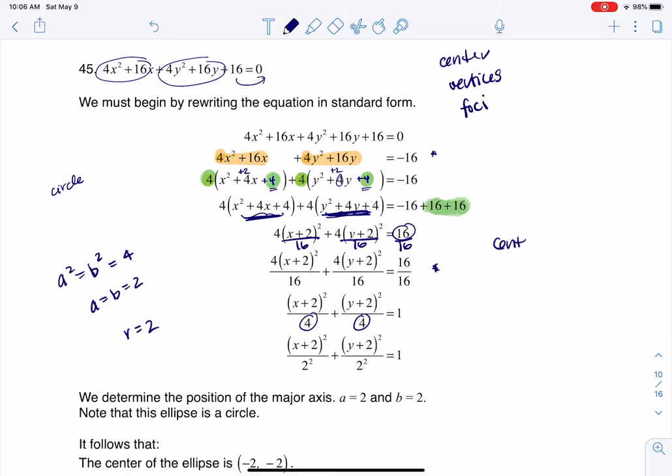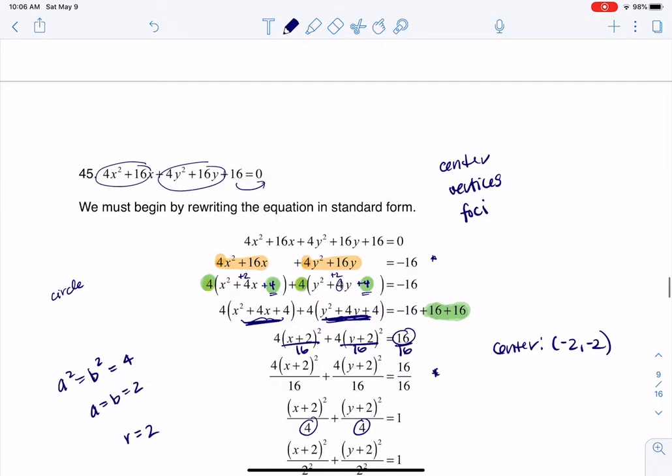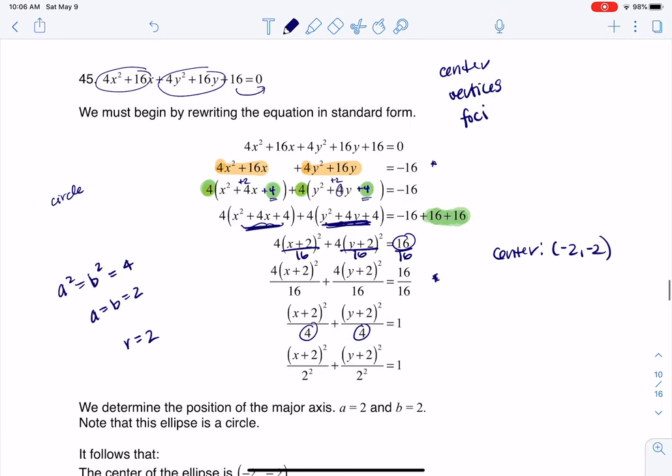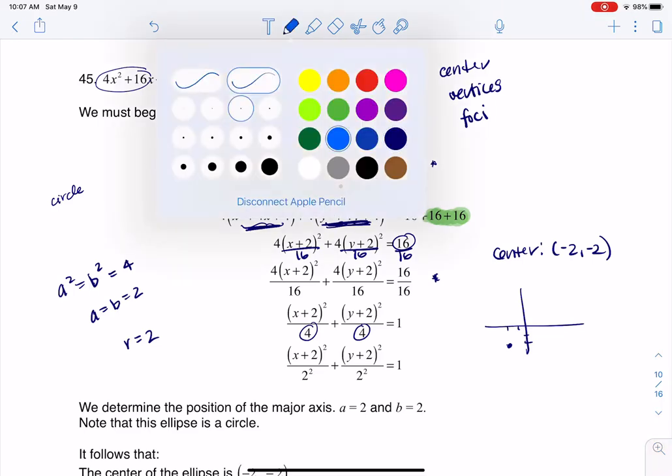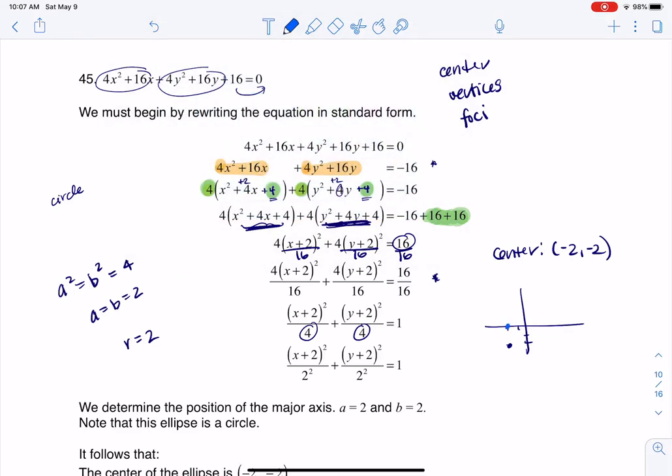If you look at the center here, which is one of the things we were asked to find, you can see that the center is negative 2, negative 2. And if I was to graph that, negative 2, negative 2, I mean if you want to get the circle, go two units in either direction. Go up 2, right 2, left 2, down 2. And you have a circle.